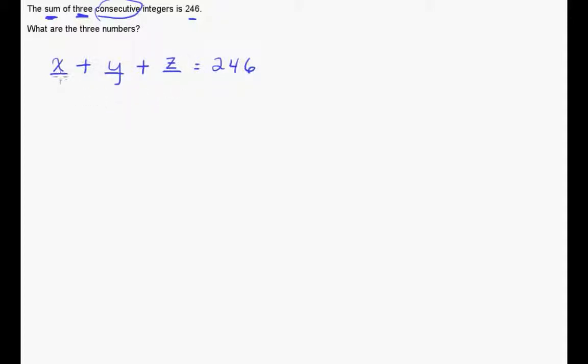Now you might be thinking that we can't add these because these are all unlike terms and we can't really do anything with this equation. And you're right, that's where that consecutive integers part comes in. Because they're consecutive, we can state that y is equal to x plus one and z is equal to x plus two. So now we can rewrite our equation as x plus one is going to substitute for y and x plus two is going to substitute for z.